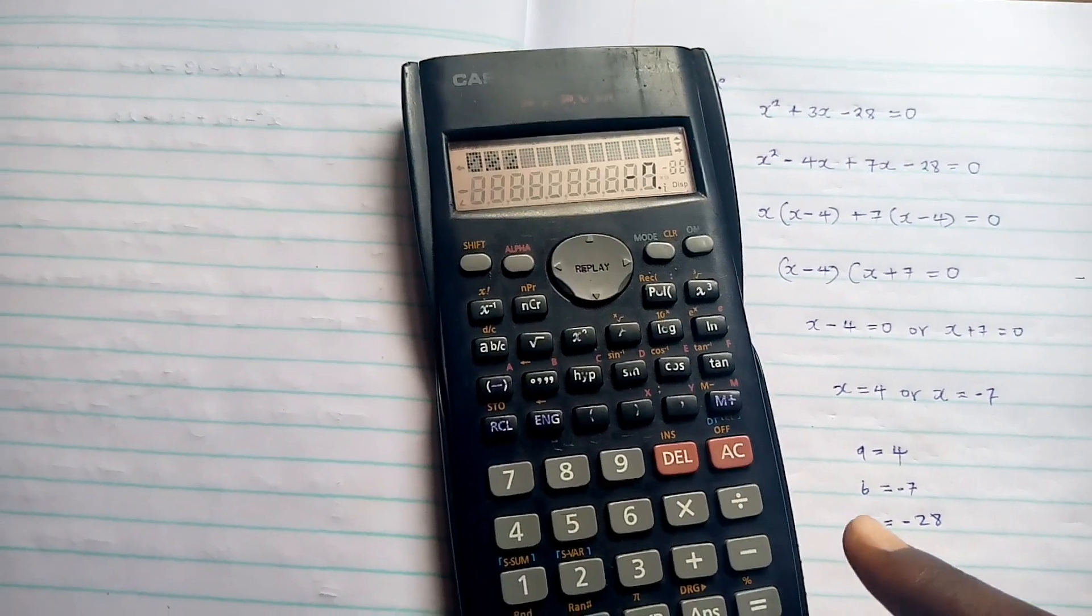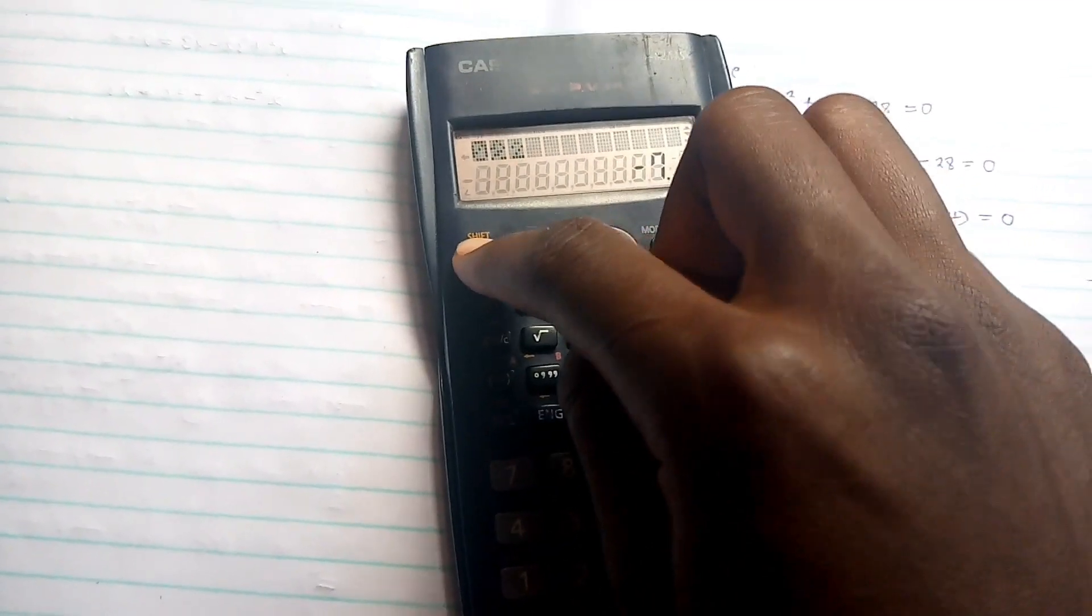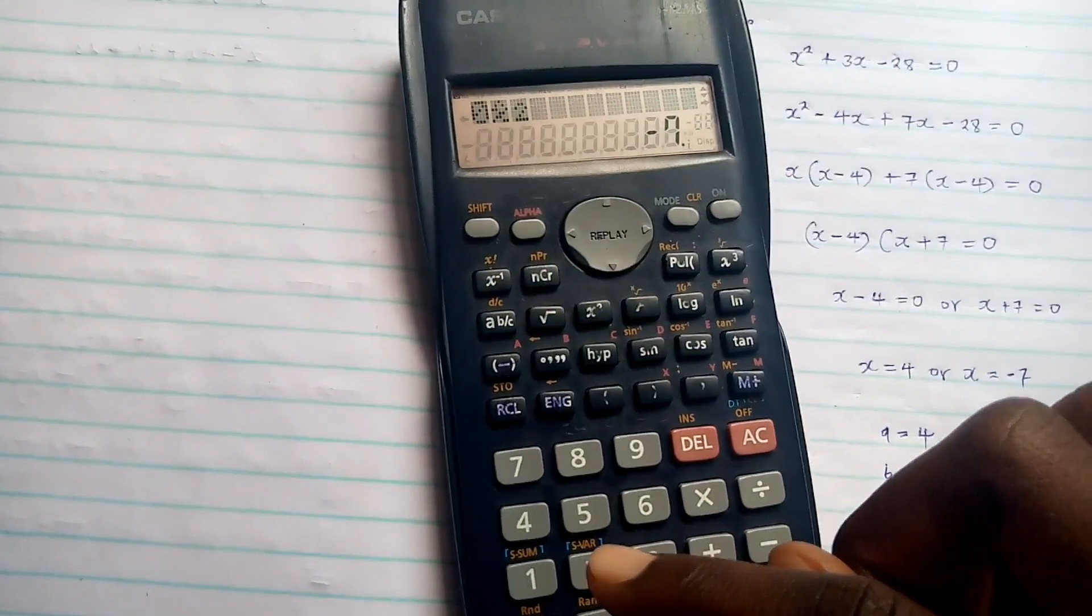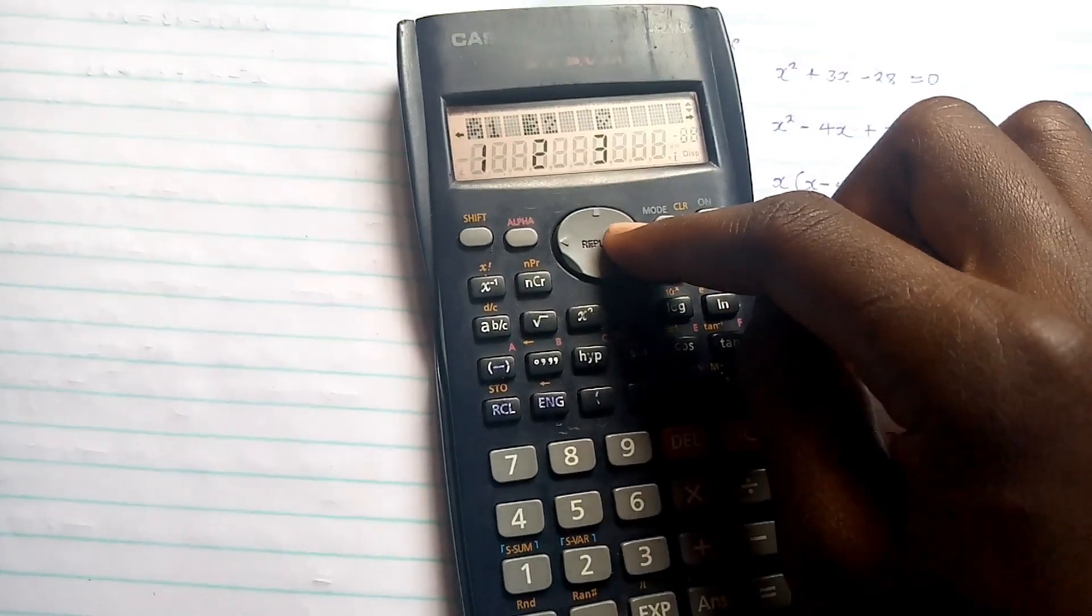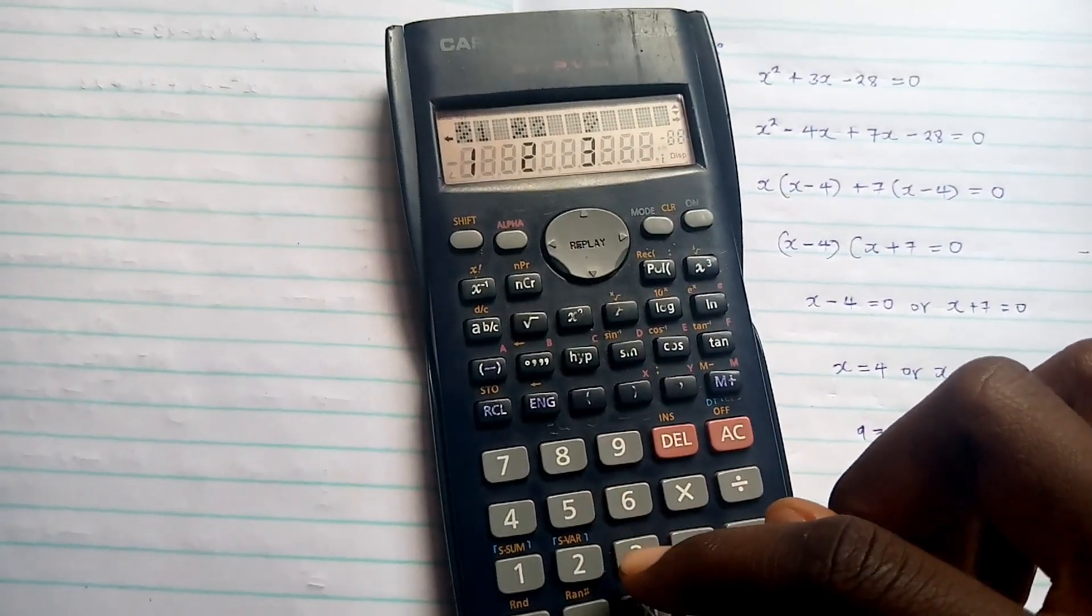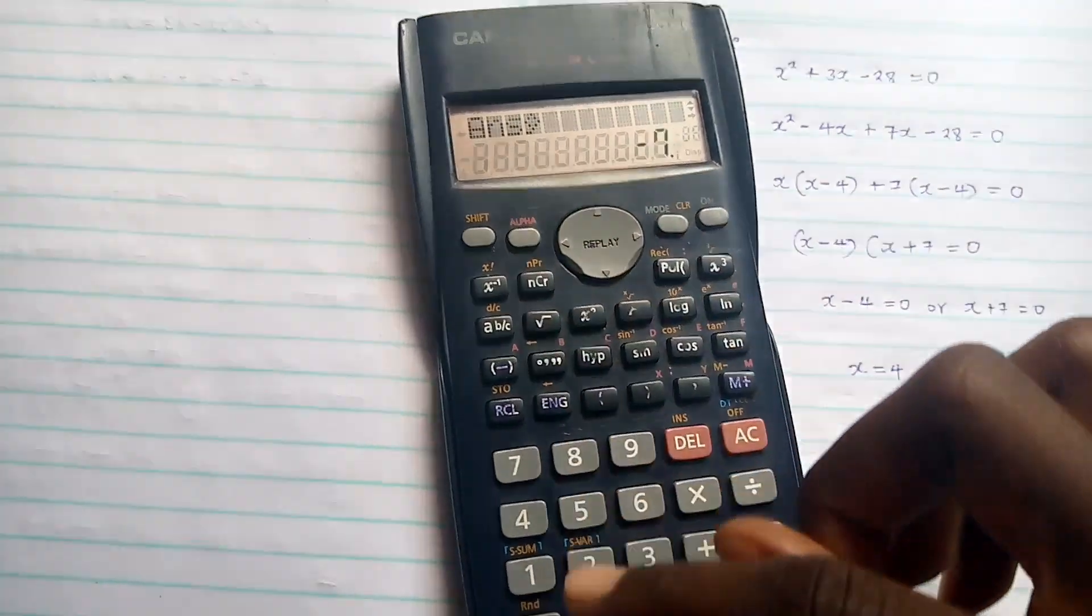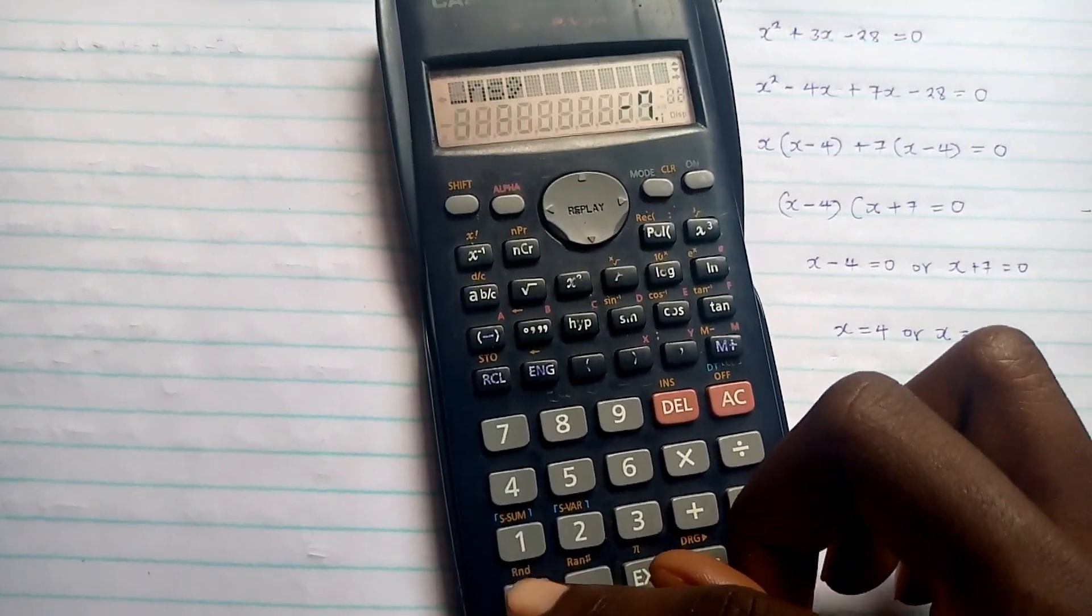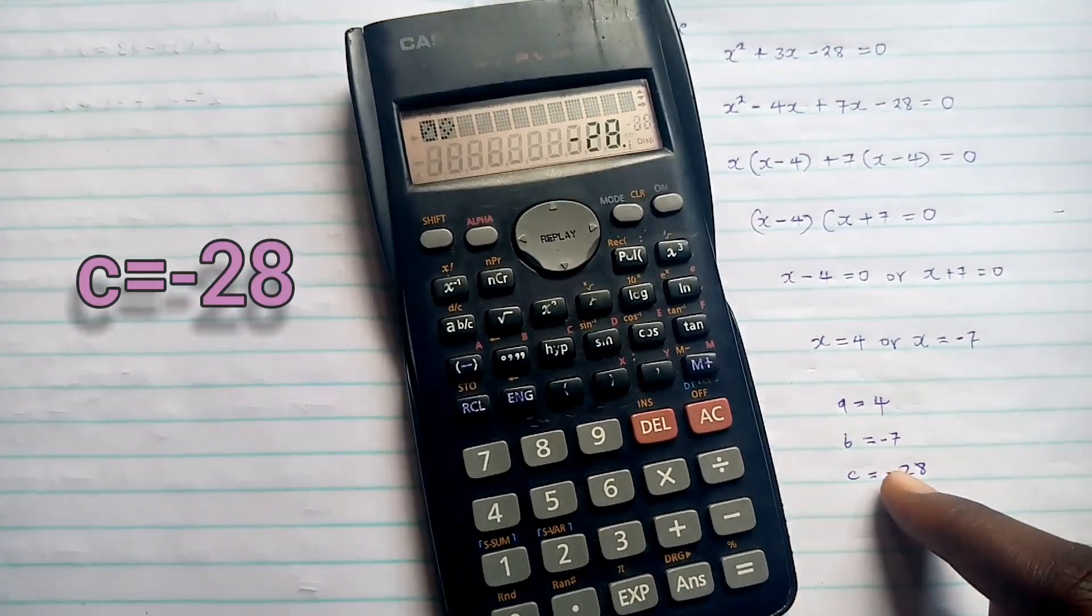Then lastly, we'll find C by the same procedure. Shift, 2, right key, 3, then left key, 0, then answer. The answer is negative 8.